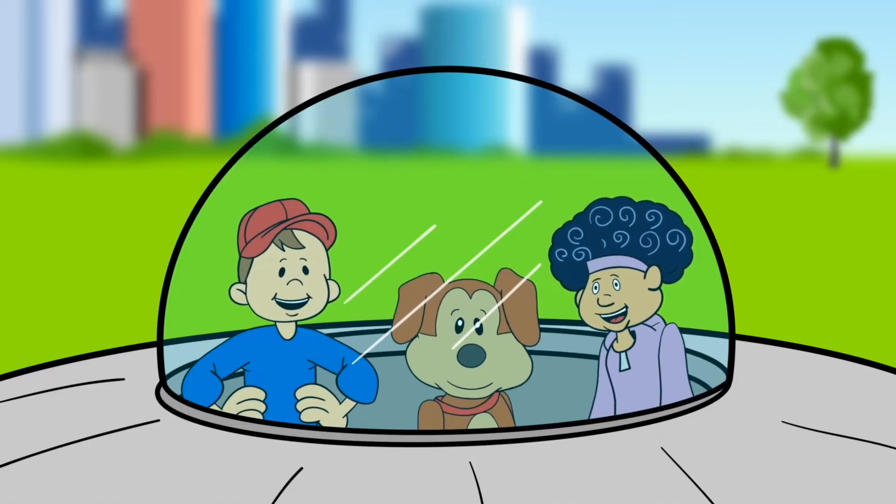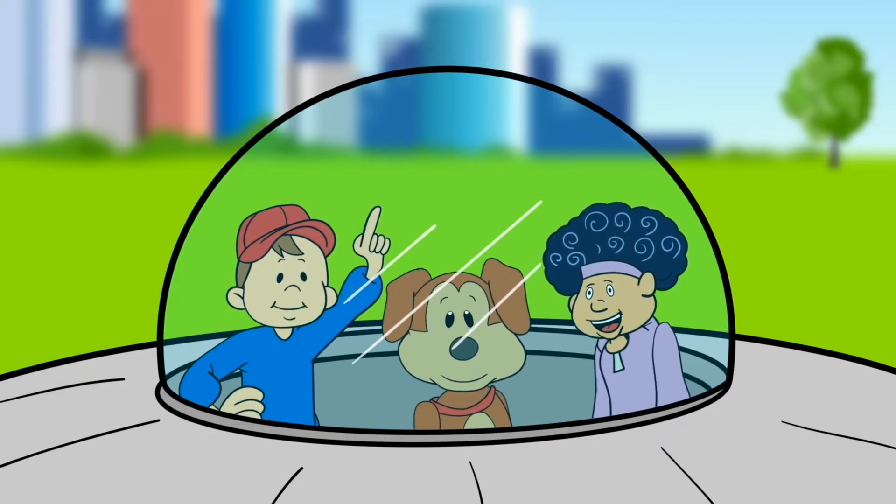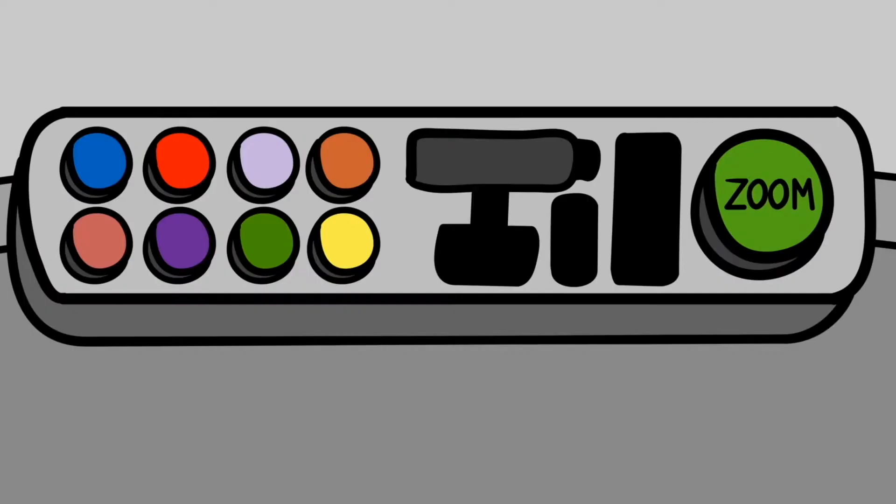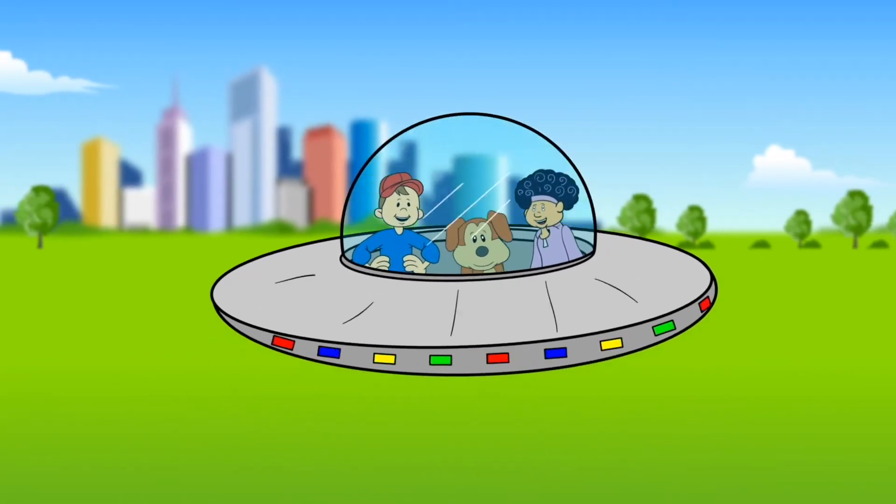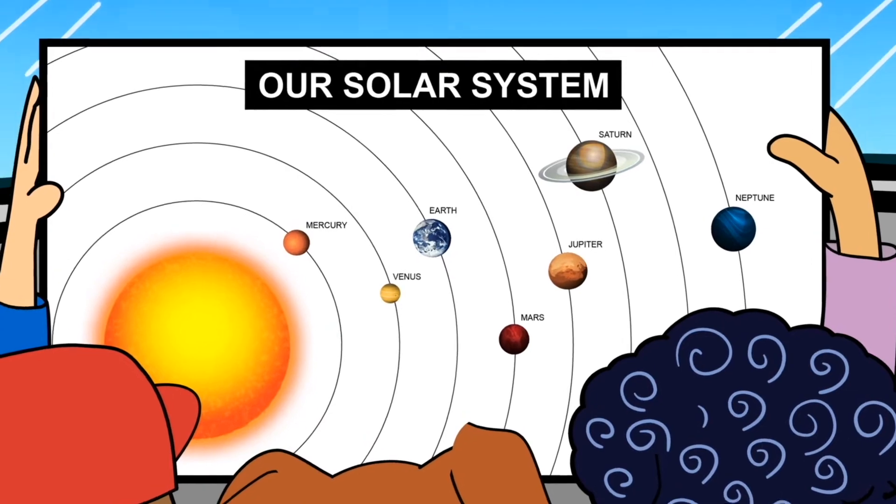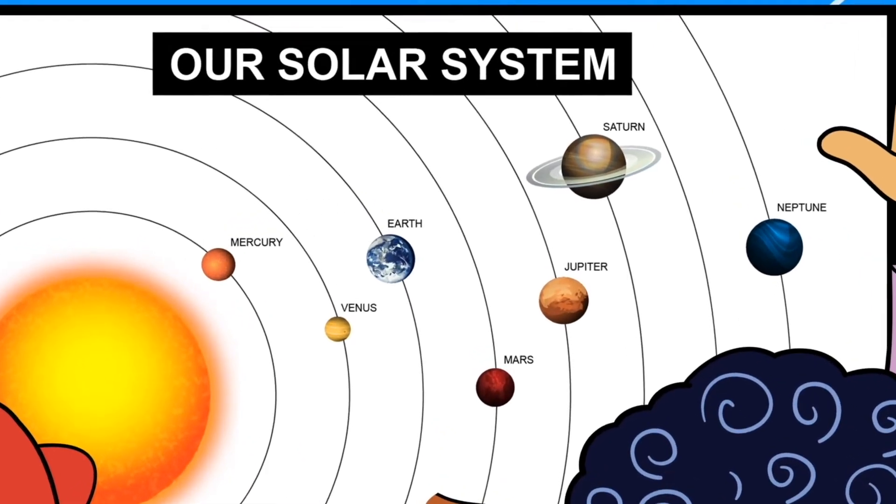There are eight planets spinning, moving round the sun. Each one is special, each and every one. We'll take our rocket ship out for a ride. The solar system map is gonna be our guide.